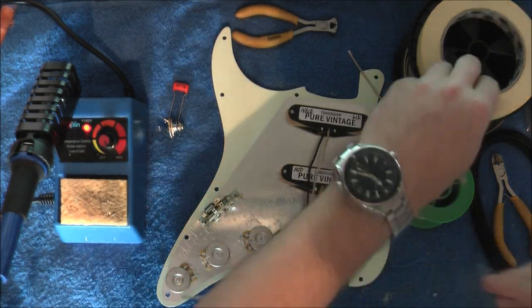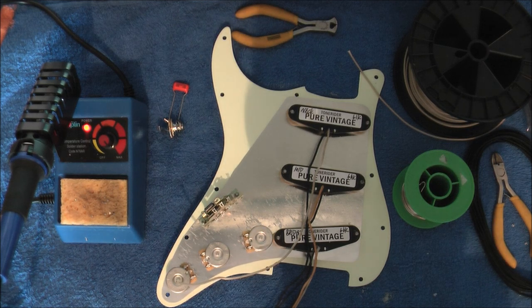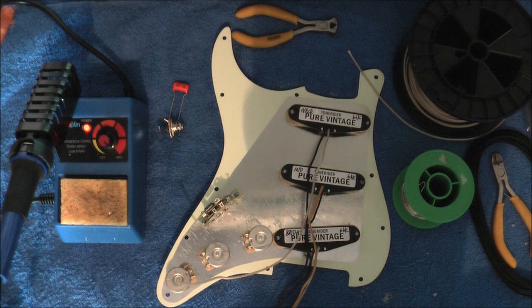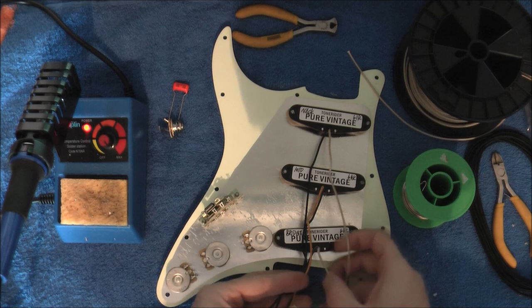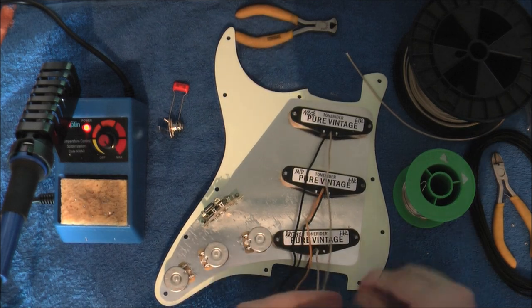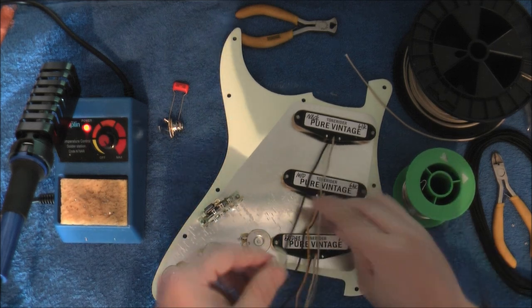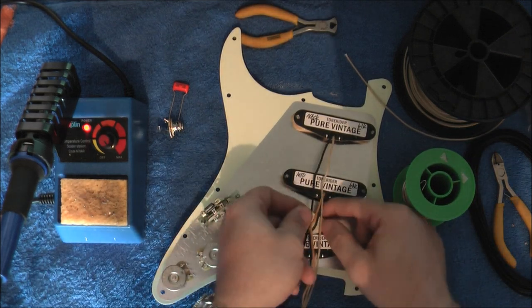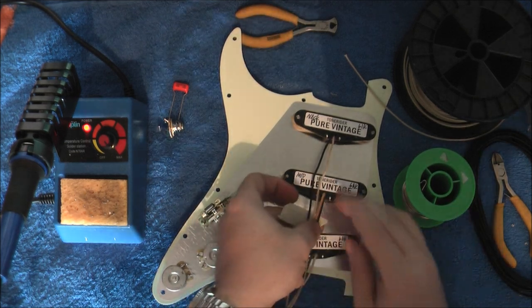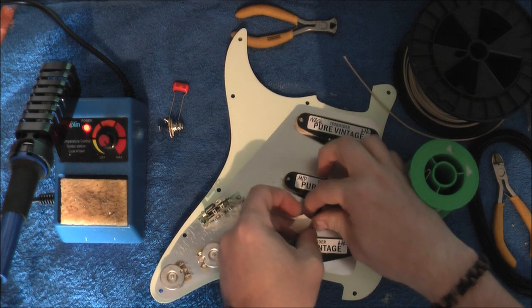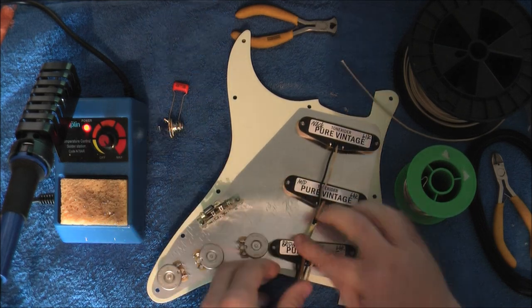So the first thing we're going to do is tidy up all these wires with a little bit of masking tape. Just a small amount in here. The problem with the Tone Riders is that two of the pickups have got white hot wires, so it's just a case of making sure I know which one's which.